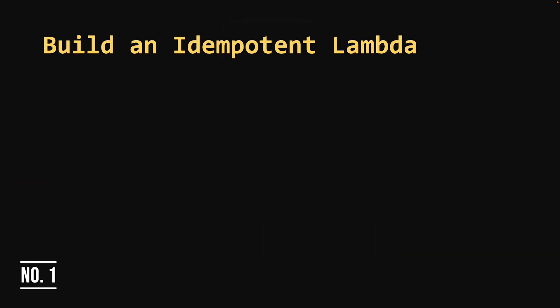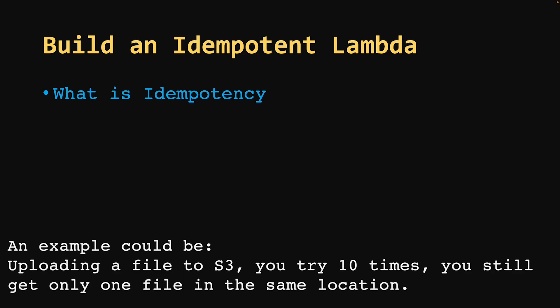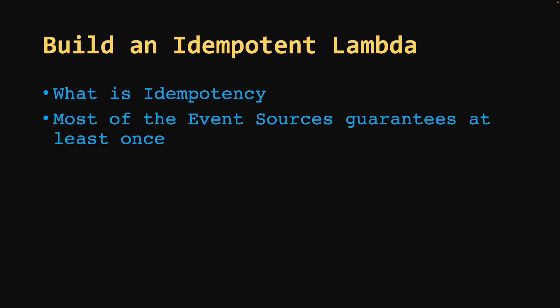Build an idempotent Lambda. A system is idempotent when a specific operation can be applied one or more times and have the same effect no matter how many times it was applied. Idempotency is a very important aspect of serverless. Event sources like SNS or SQS provide at least once delivery, which means you can get an event more than once. Imagine you are building a payment service or order service and your Lambda processes the same request a couple of times — so try to inculcate idempotency in your Lambda.